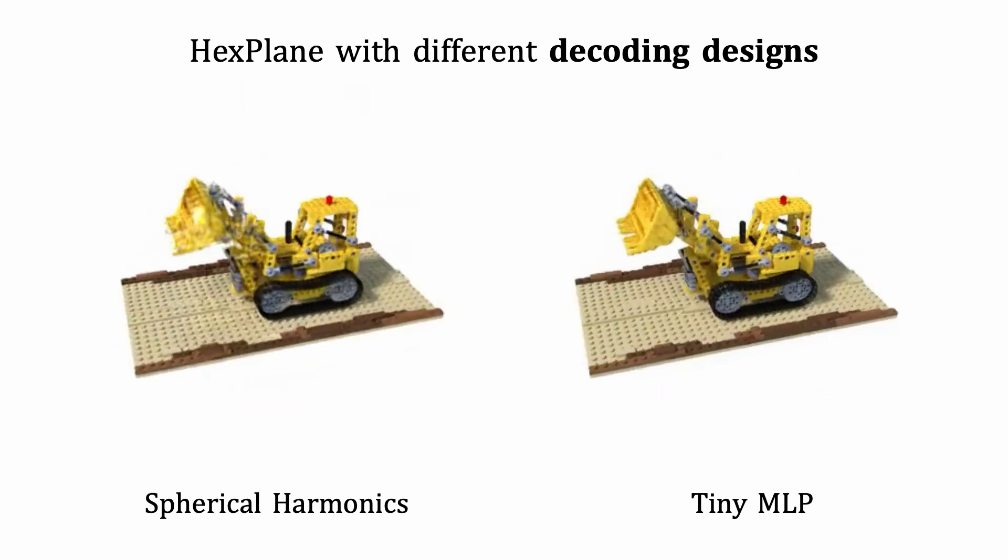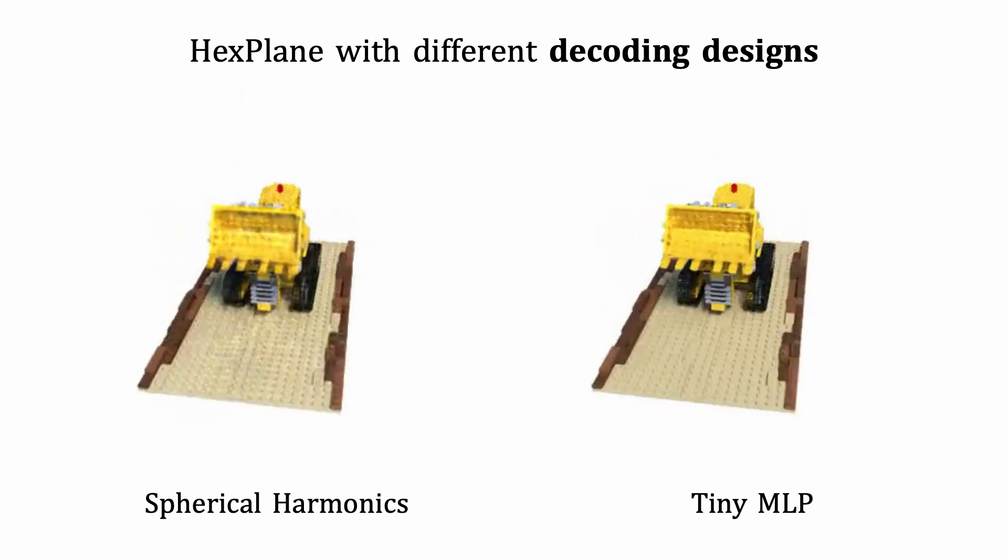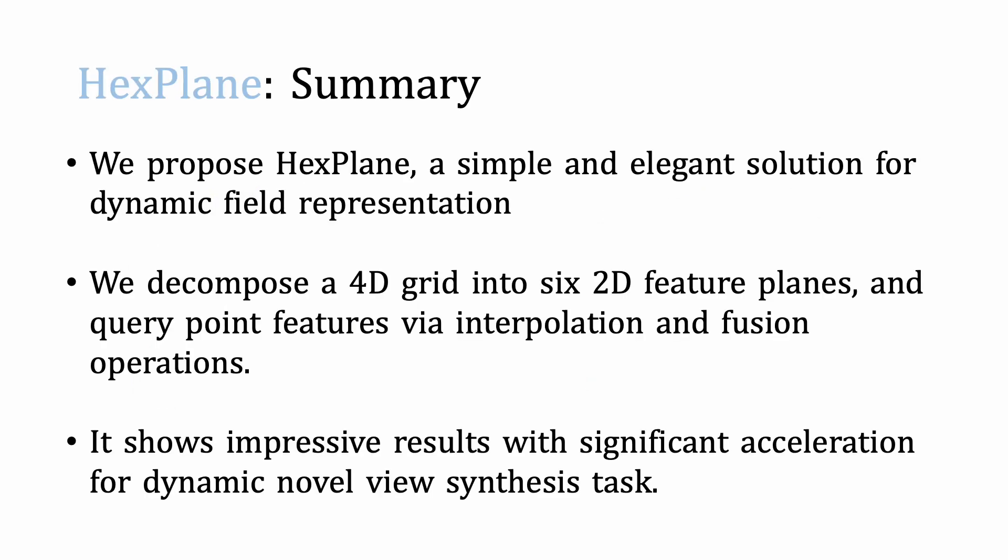We can also replace the tiny MLP by spherical harmonics to regress RGB colors from fused features and view directions, which leads to a pure explicit model with slightly degenerated performance.